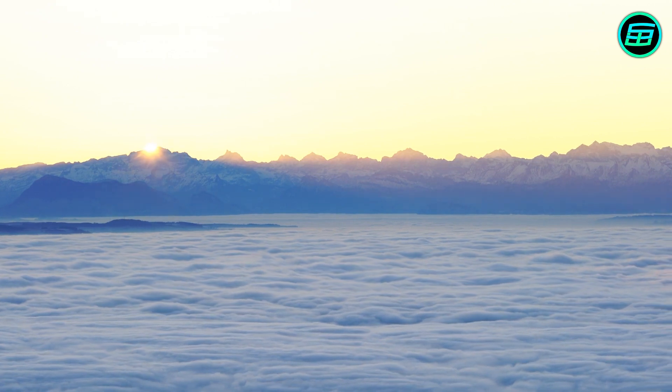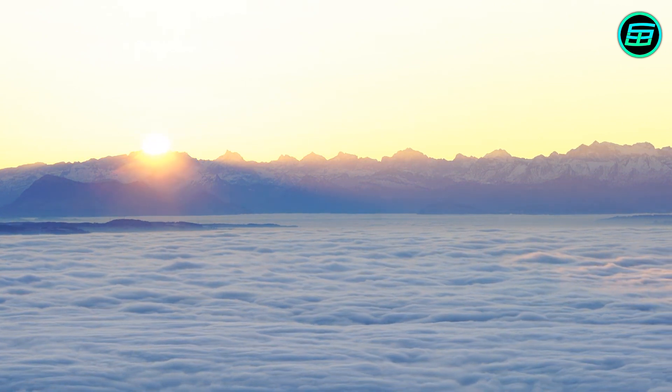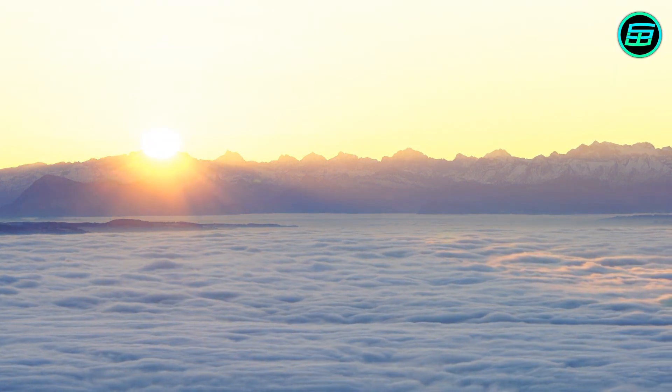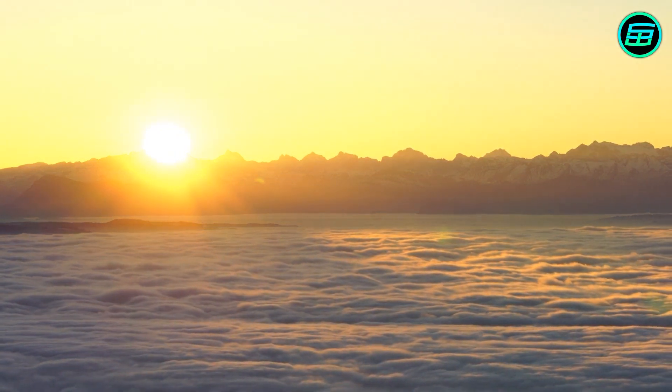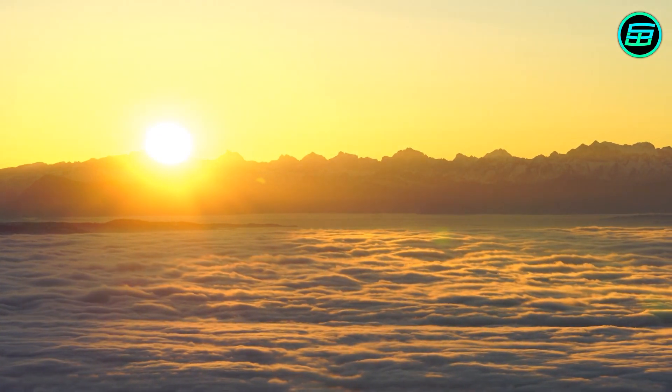This is because colours are scattered when they enter our atmosphere. The least scattered colours are mainly red and yellow. Therefore on Earth, we see the Sun as a combination of red and yellow, which is orange.